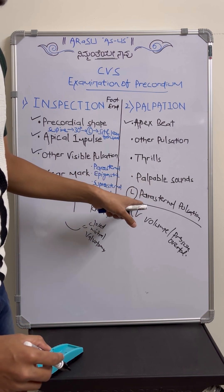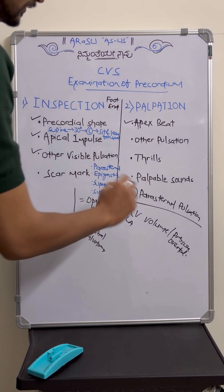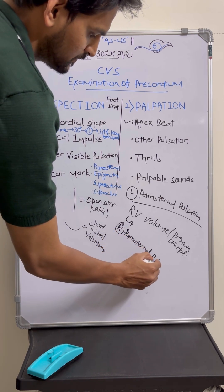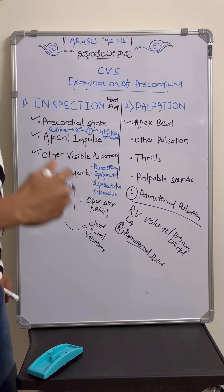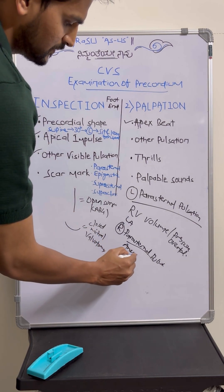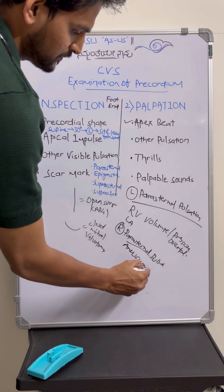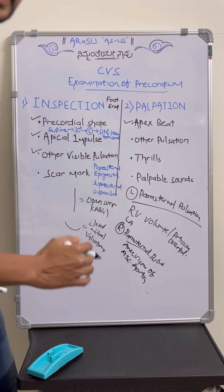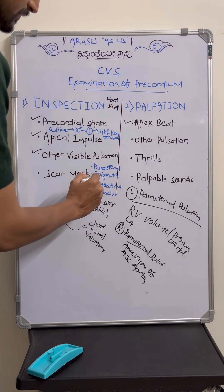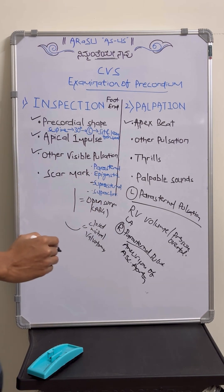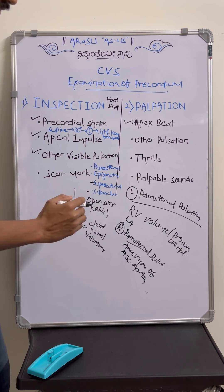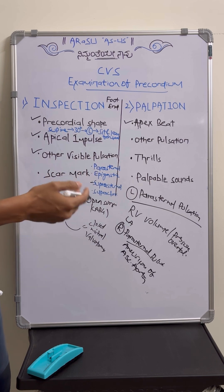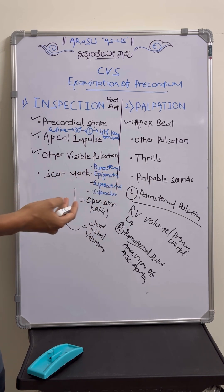Coming to the right parasternal pulsation — an aneurysm of the ascending aorta may be the reason. Then comes suprasternal and supraclavicular pulsation. These pulsations are seen in aneurysm of the arch of aorta and any hyperkinetic circulation states, for example anemia, thyrotoxicosis, or pregnancy.